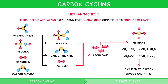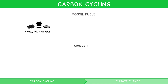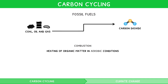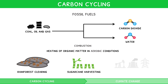Therefore, more concerning with our current society is the release of CO2 through anthropogenic burning of coal, oil and natural gas — named fossil fuels. Combustion, defined as the heating of organic matter in aerobic conditions to produce CO2 and water, occurs naturally in grasslands. Anthropogenic processes such as increased rainforest clearing, sugarcane harvesting or energy production have heightened this natural process, contributing to the premature release of CO2 from such organisms.